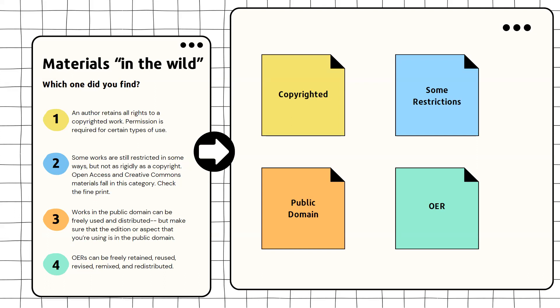The average textbook is a good example of copyrighted material. If you use a copyrighted textbook in your class it means that your students will have to purchase a copy or access to a copy. Items with some restrictions are becoming much more popular especially with born-digital items like images. Creative Commons licenses usually fall into this category. There are different levels of licensing which I will talk about later, but Creative Commons items are free to use as long as you follow the usage rules specified by the individual creator.